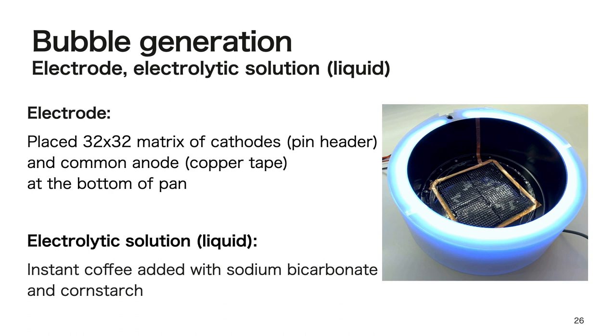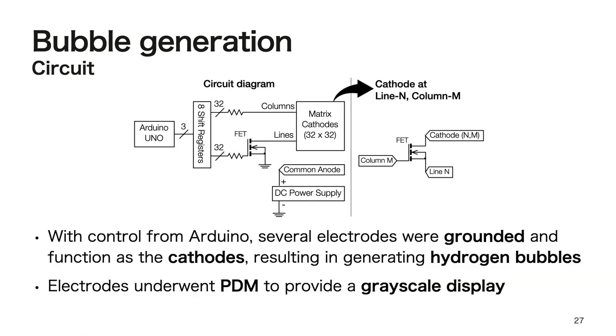We placed electrodes at the bottom of the water pan. The electrodes for pixel display are only cathodes and are arranged in a 32 by 32 matrix. The anode is common and placed around the cathodes. As the electrolytic solution, we used instant coffee added with sodium bicarbonate and cornstarch. We used the active matrix method for the matrix circuit. With the control from Arduino, several arbitrary pixel electrodes were grounded and functioned as the cathodes resulting in generating hydrogen bubbles.